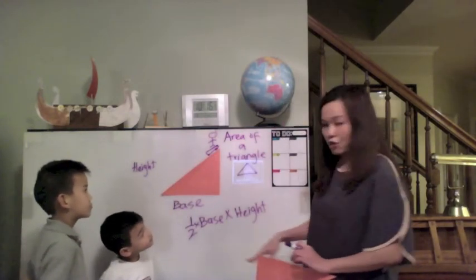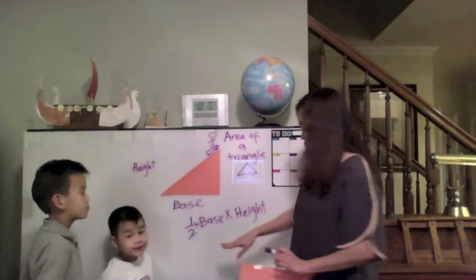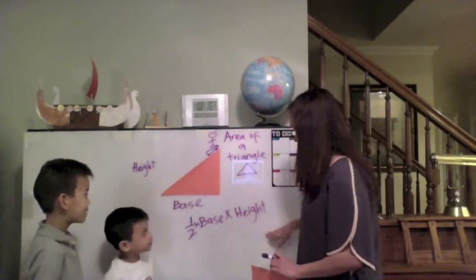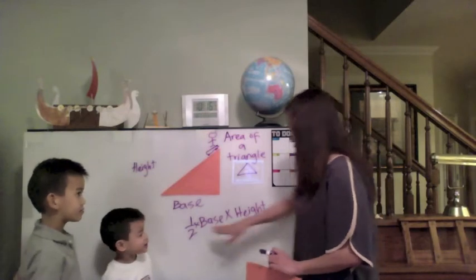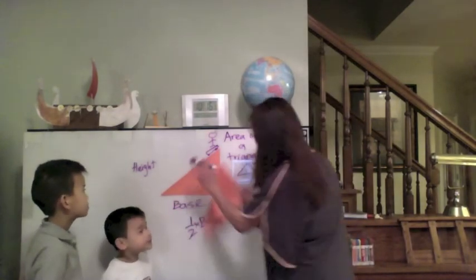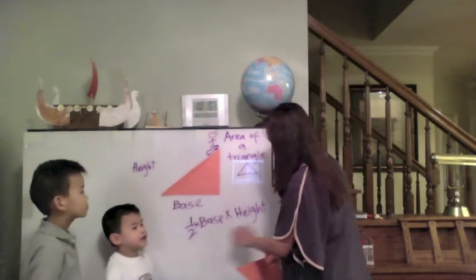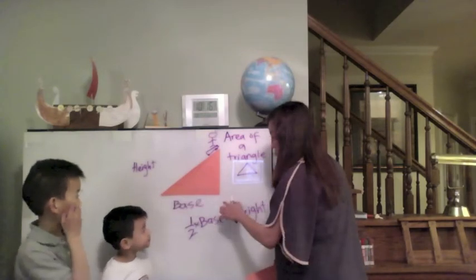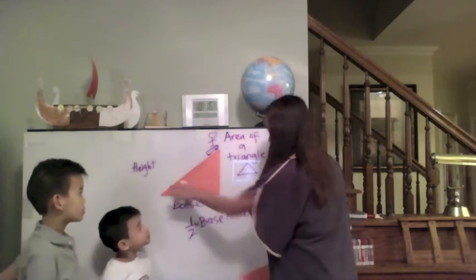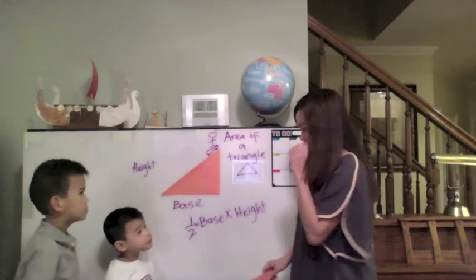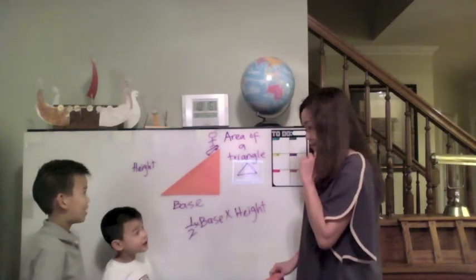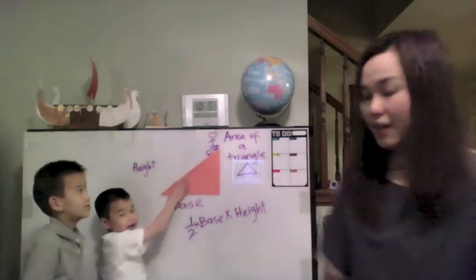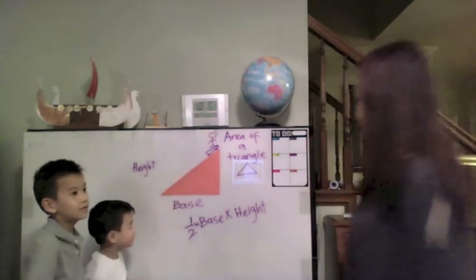So the area of a triangle, therefore, would be half base times height. Because we know that the area of a rectangle is base times height. So the area of a triangle would be half times base times height, because it's like a half. Very good.